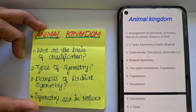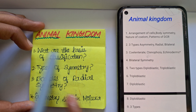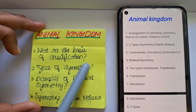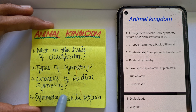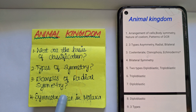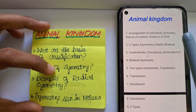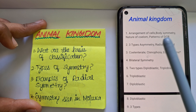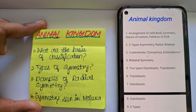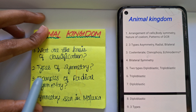So the first set of questions is based on the basic introduction of classification only. What are the basics of classification in animal kingdom? They are your arrangement of cells, body symmetry, nature of coelom, and patterns of DCR — that is digestive, circulatory, and reproductive systems.